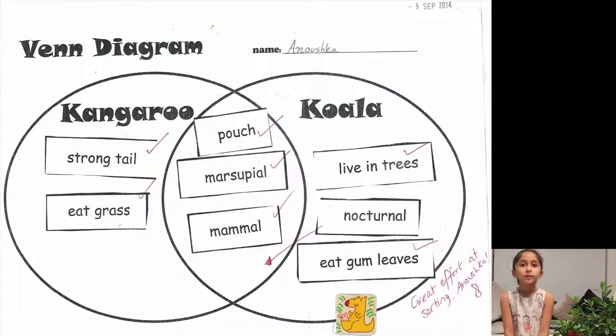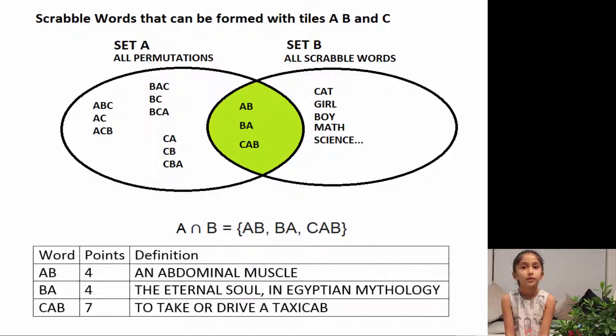I found a list of all Scrabble words and loaded these in a table. Then my mum helped me write a program to find all the different ways the tiles could be arranged, and stored these in another table. In computing, we learnt about Venn diagrams. I figured I could use this method to find those permutations that were in the Scrabble dictionary. The common area — the intersection of the two tables — would have the allowed Scrabble words.